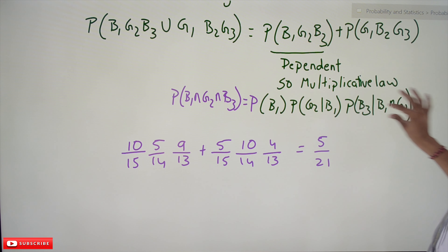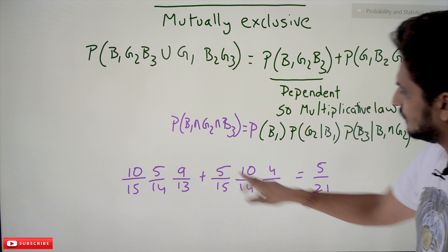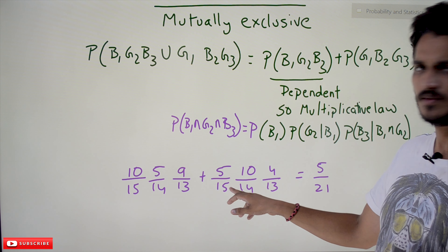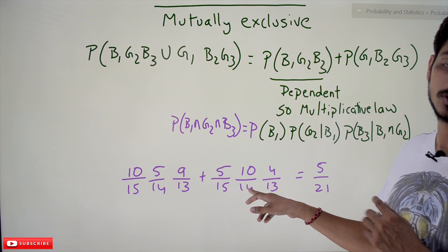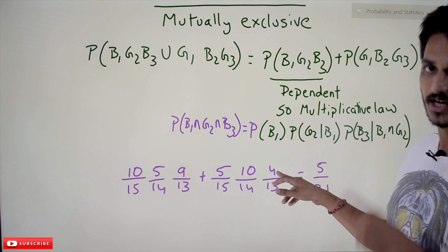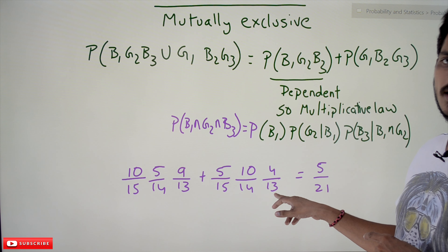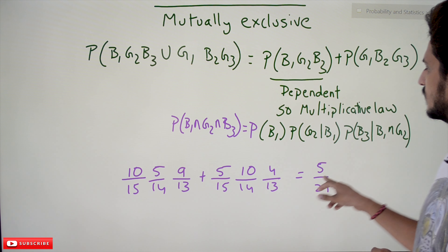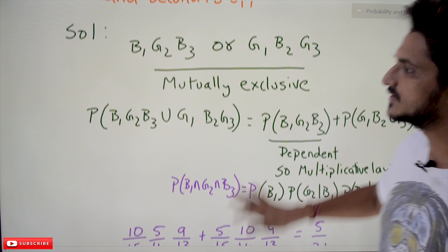Similarly for P(G1B2G3): P(G1) = 5/15, P(B2|G1) = 10/14, P(G3|G1∩B2) = 4/13 (one girl already selected). The total probability comes out to 5/21. This is the final answer.